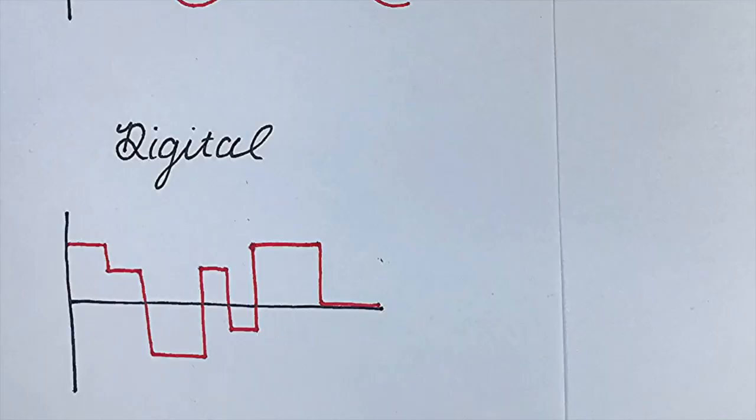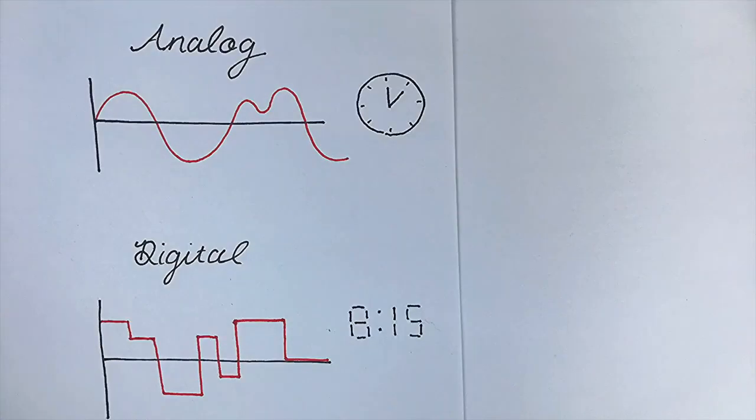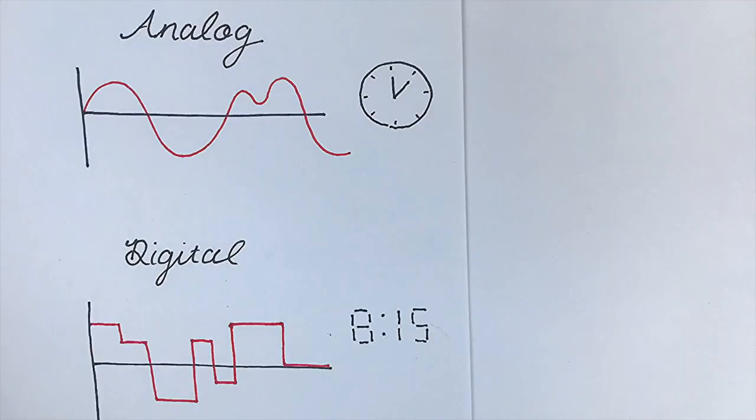The easiest analogy to think between these is analog versus digital clocks. In an analog clock, the hands could point to any degree on the entire circumference. Digital clocks, however, are more precise, but they count up in finite units.